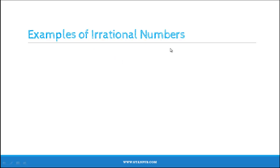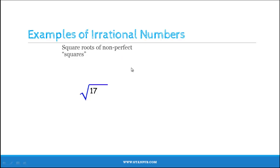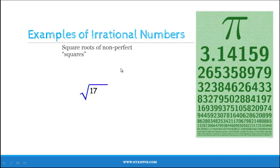Now let us look at some examples of irrational numbers. Square roots of non-perfect squares are irrational numbers. Since 17 is a non-perfect square, the square root of 17 gives us an irrational number. We also know the number pi, which has a decimal expansion that is non-terminating and non-repeating. Pi is also an irrational number.